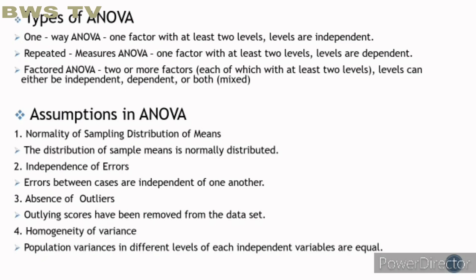Factorial ANOVA has two or more factors, each of which with at least two levels. Levels can either be dependent, independent, or both.